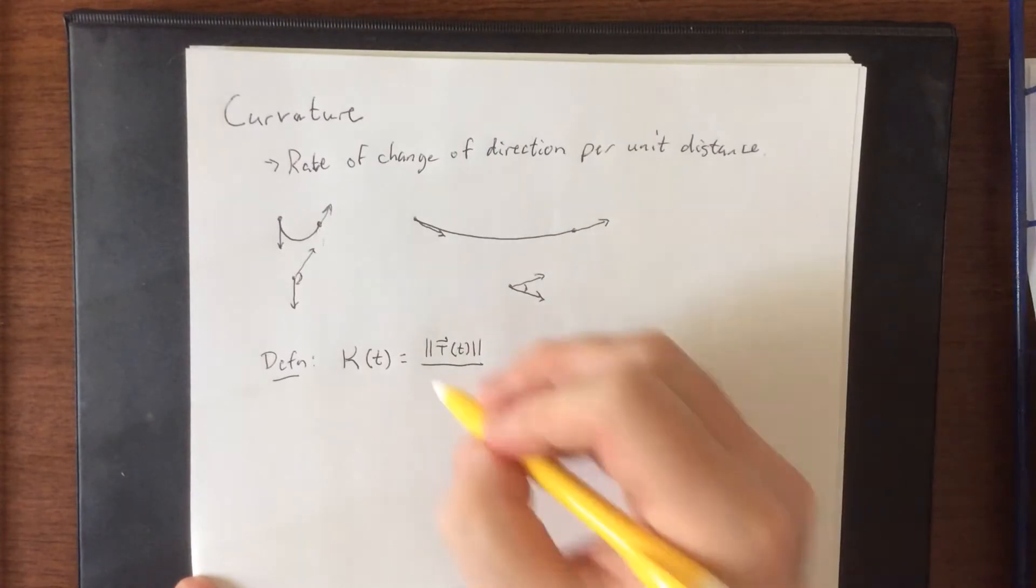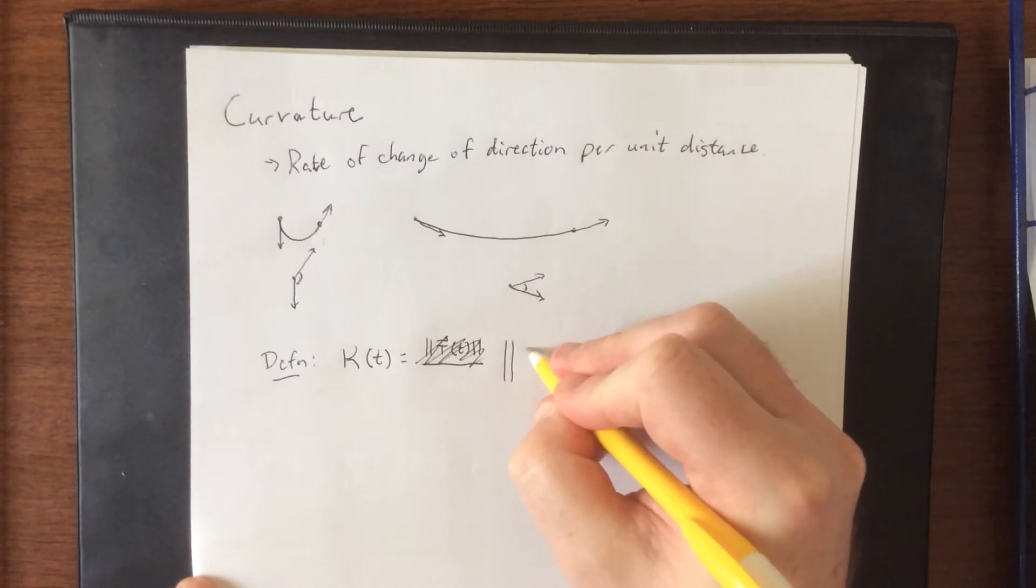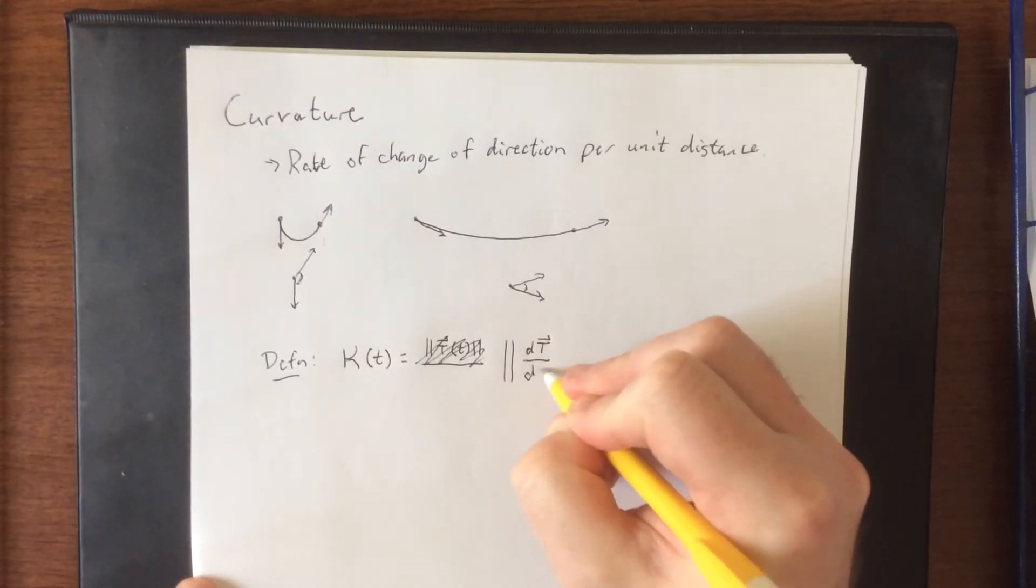We take the magnitude of the unit tangent vector... No we don't. Let's try that again. We take the magnitude of the rate of change of the direction with respect to arc length.